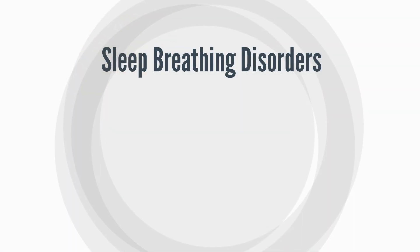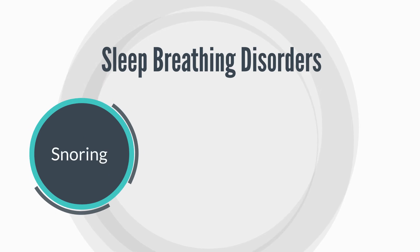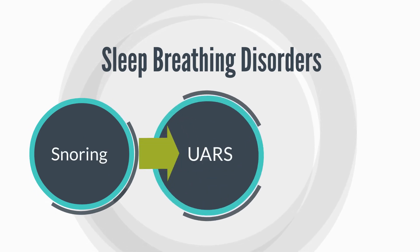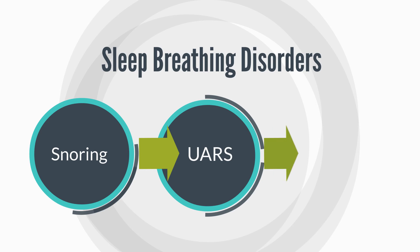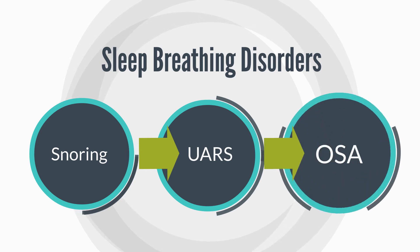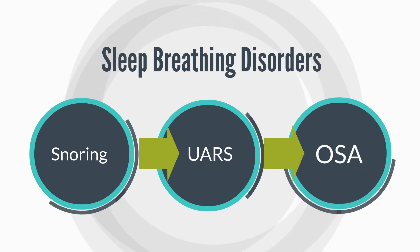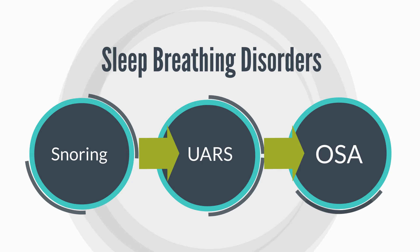Obstructive sleep apnea is part of a spectrum known as sleep breathing disorders. Snoring is the mildest form of sleep breathing disorders, while obstructive sleep apnea, or OSA, lies on the extreme end of the spectrum.